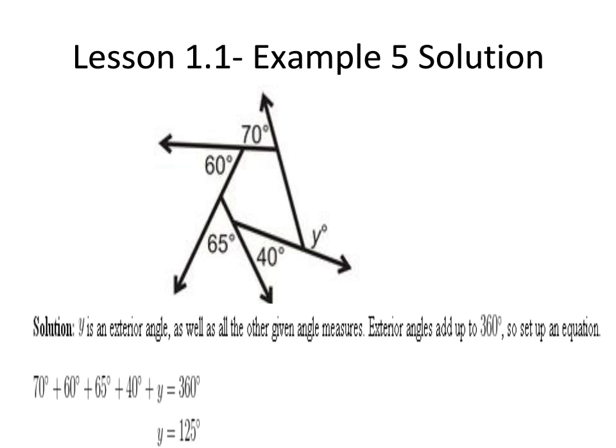The exterior angle sum theorem states that the sum of the exterior angles of any polygon is 360 degrees. From the figure we find that all of the named angles are exterior angles of a polygon. So according to the exterior angle sum theorem all of the named angles should add up to 360 degrees.